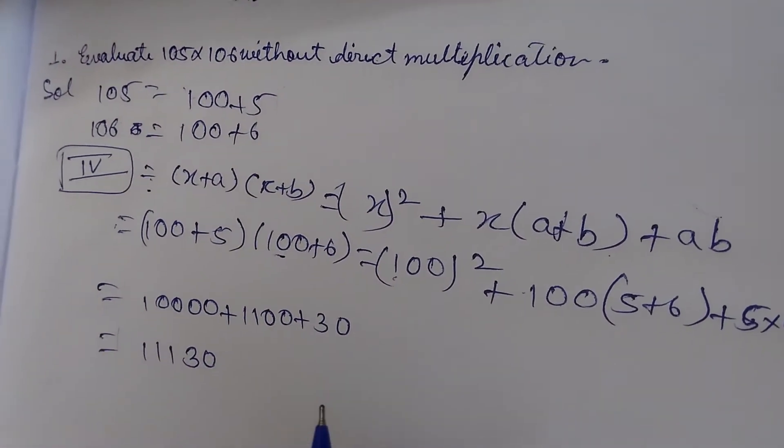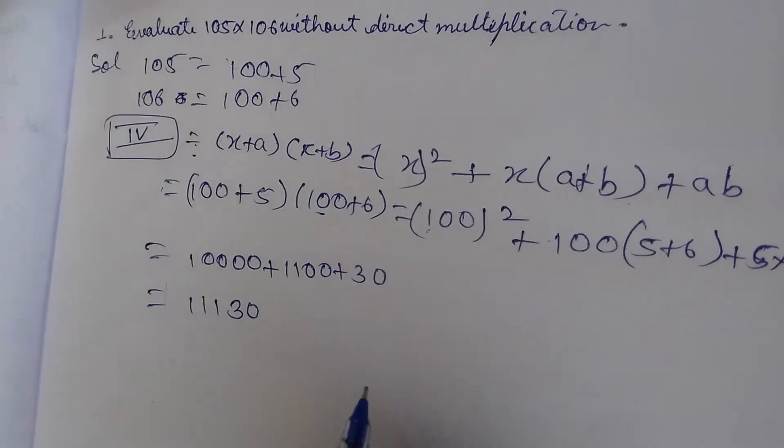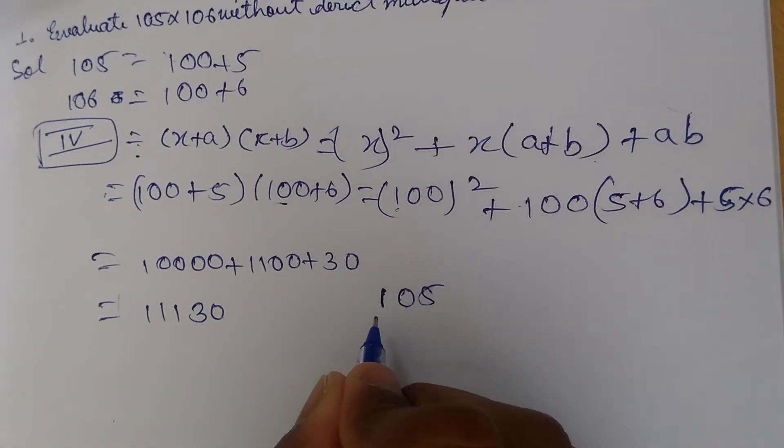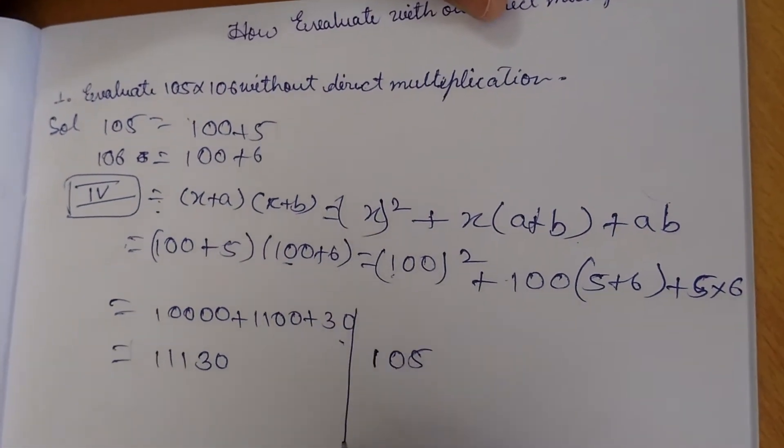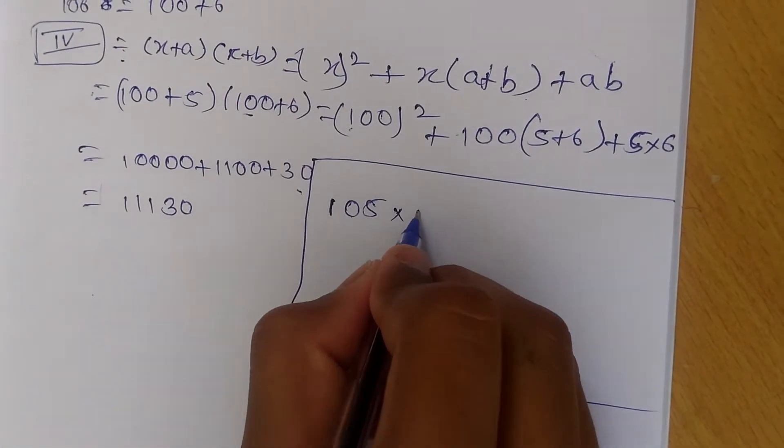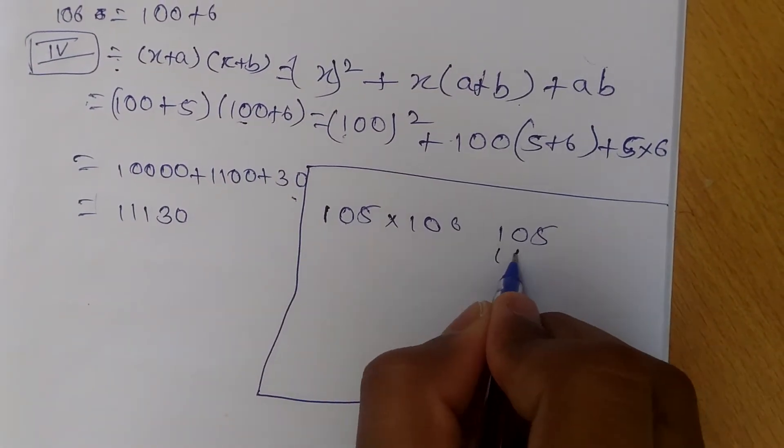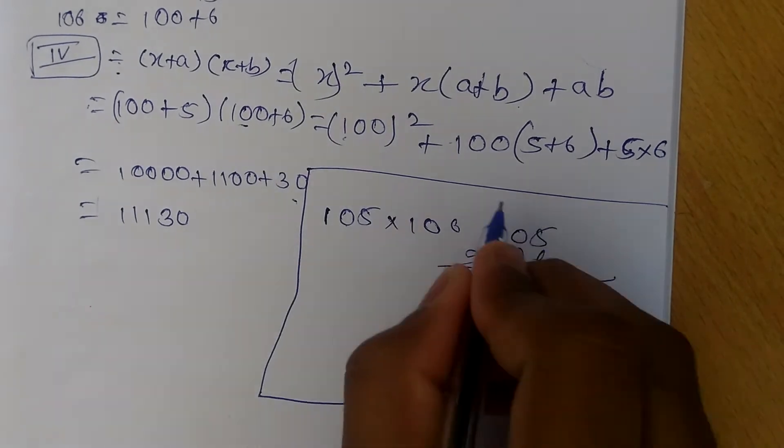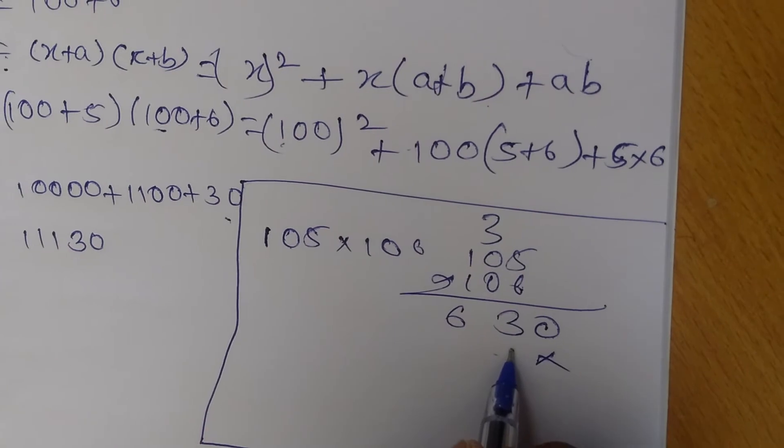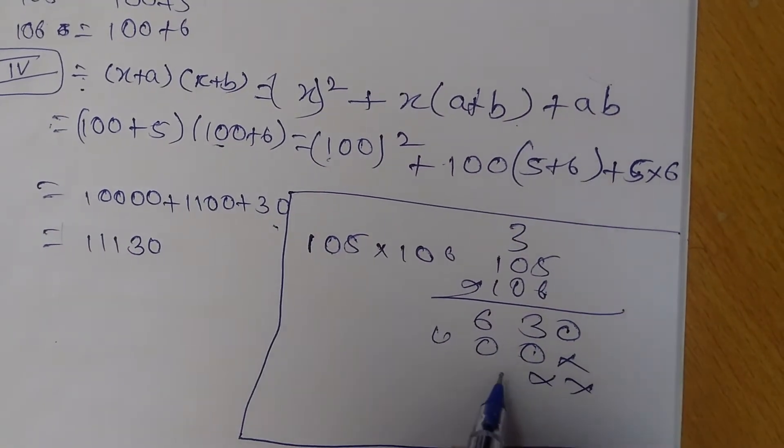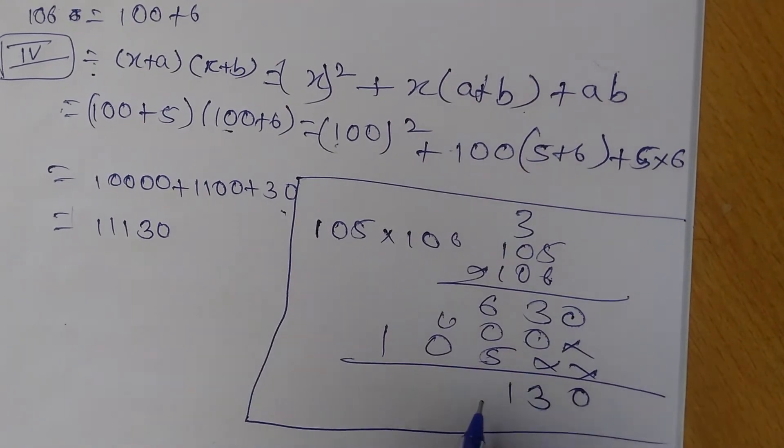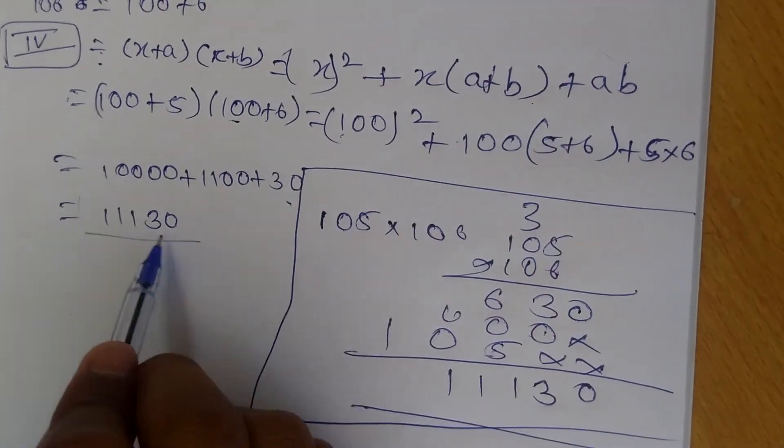If you have some doubt, to clear your doubt I am multiplying it directly also. So I am multiplying 105 times 106: 0, 630, 10500, equals 11130. This and this both are correct, so it is correct.